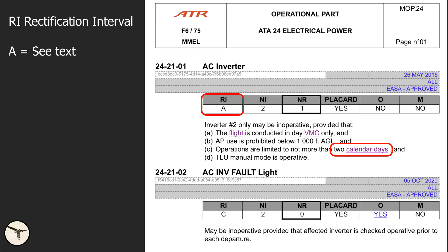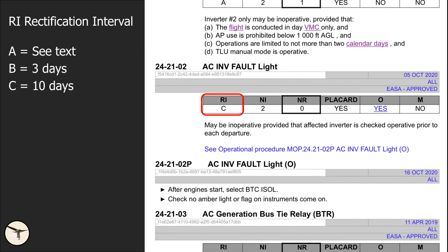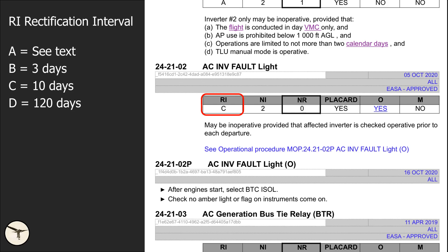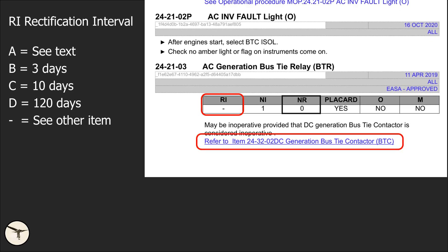The limitation can also be a certain number of flights or flight hours. Category B means within three consecutive calendar days, excluding the day of discovery. For example, if it was recorded at 10 AM on January 26th, the three-day interval begins at midnight and ends at midnight on January 29th. C means 10 days and D means 120 days. A dash redirects you to another reference item which provides the rectification interval category — in this case, you are redirected to item 24-32-02, DC generation bus high contactor, BTC.